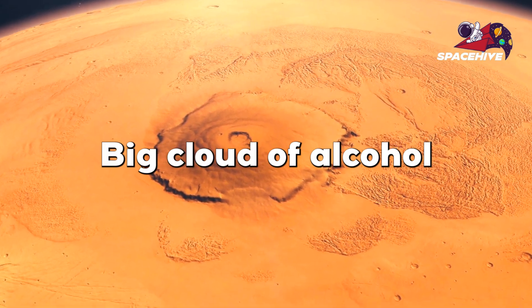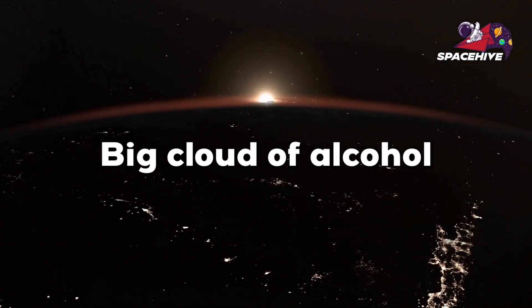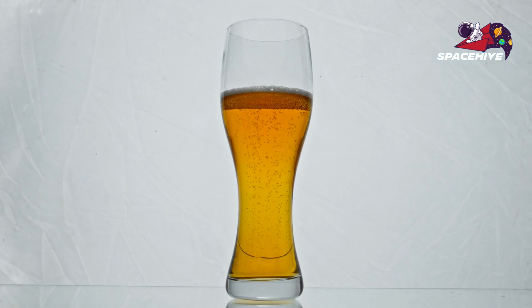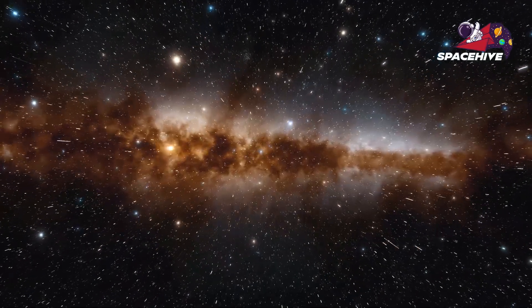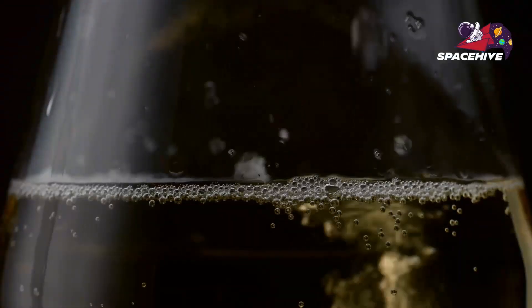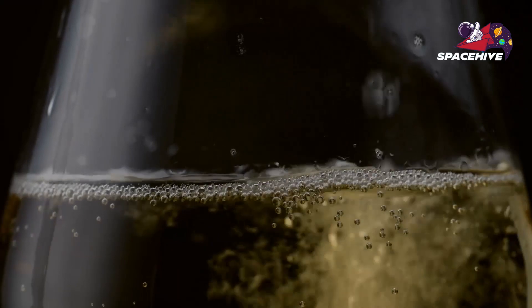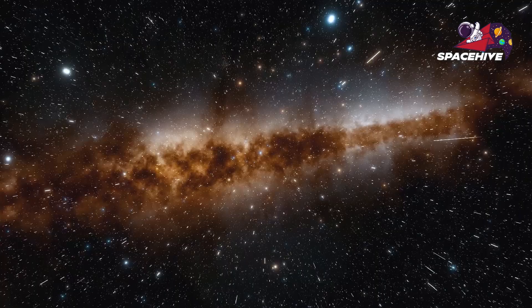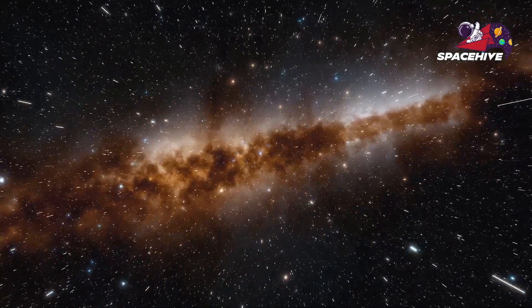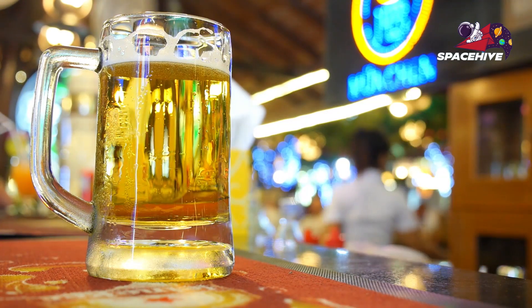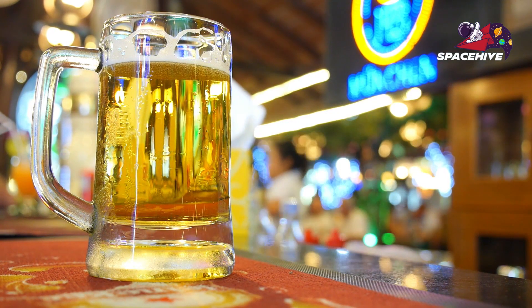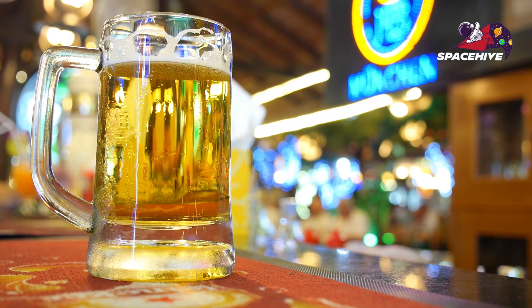Number 6. Did you know that there is a giant cloud of alcohol in space? That's right, floating out there in the Milky Way galaxy is a massive cloud of ethyl alcohol, also known as ethanol. This cloud is located near the constellation Aquila, and contains enough alcohol to fill over 400 trillion pints of beer. That's enough to provide every person on Earth with a lifetime supply of alcohol.